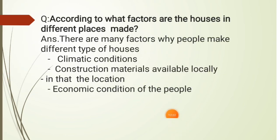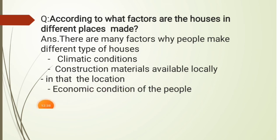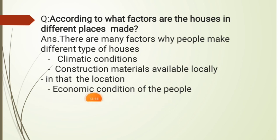According to what factors are houses in different places made? There are many factors: number one, climatic conditions; number two, construction materials available locally; and number three, the economic condition of the people. If people are poor, they will not be able to buy concrete, cement, and bricks, so they will make their shelter according to their economic condition.